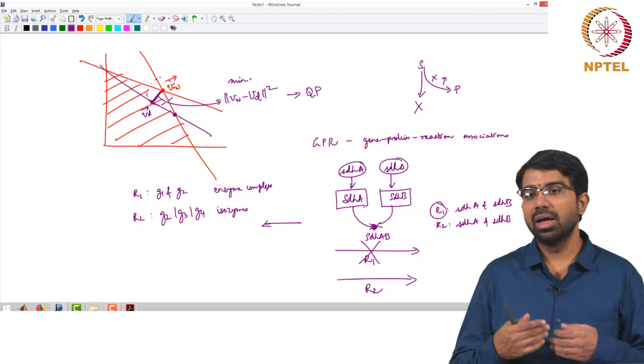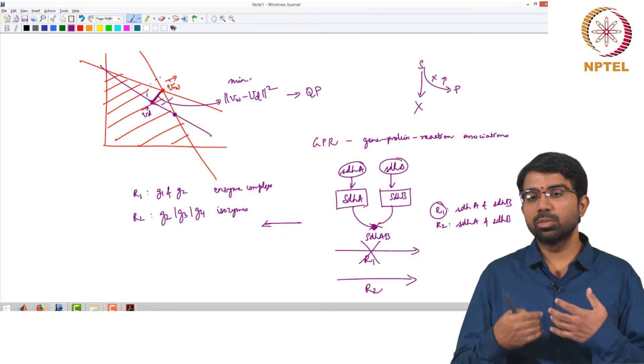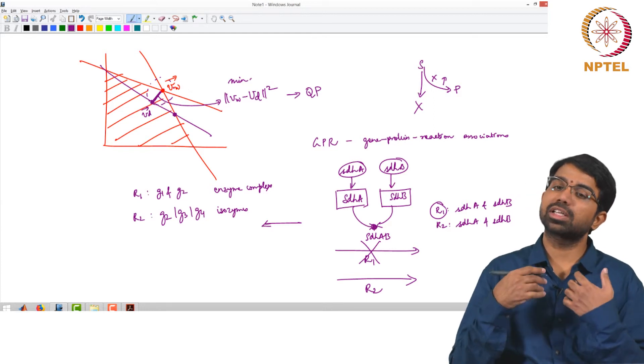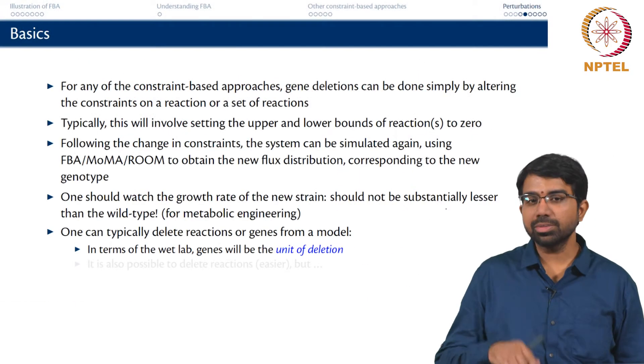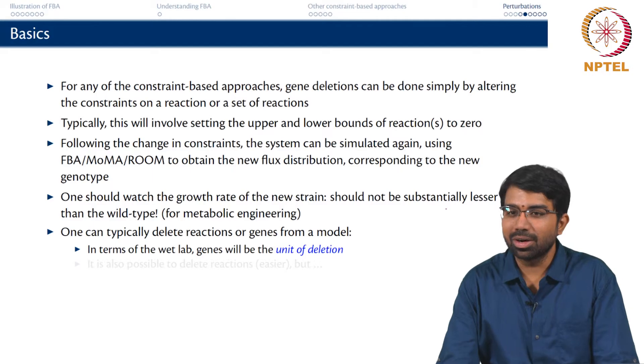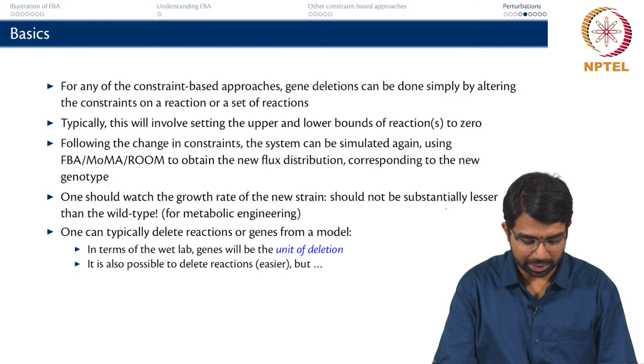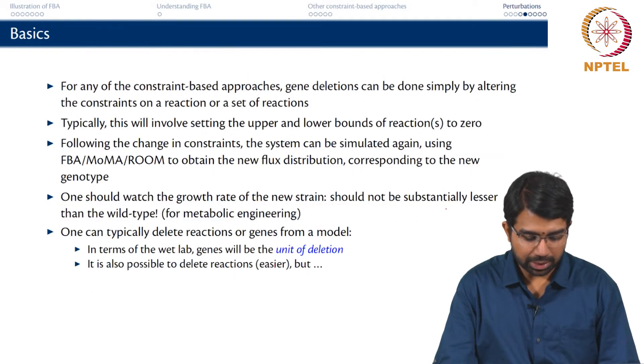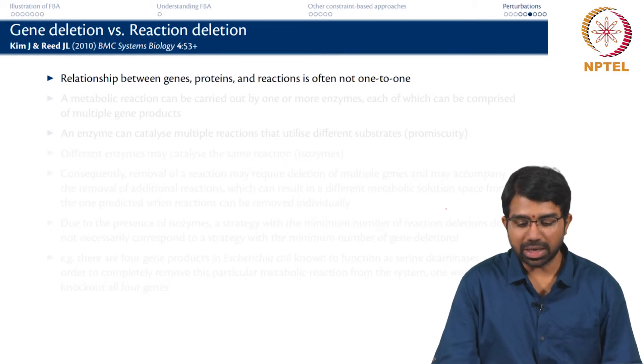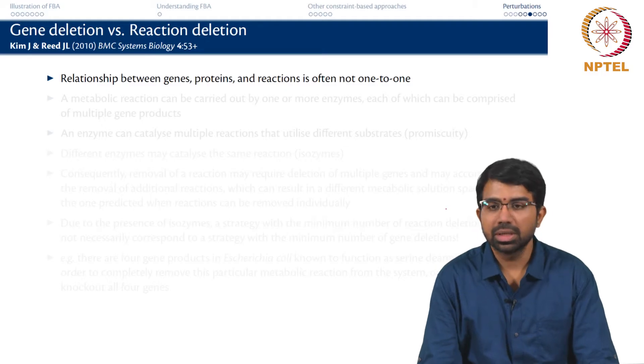There is no meaning in removing a gene from the model in the sense that when you say you remove a gene from a model, it means that you are removing all the corresponding reactions out of the model. But in terms of the wet lab, the genes are the unit of deletion. You cannot knock out a reaction in the wet lab. You will be able to knock out a gene using sRNA or any of those techniques.